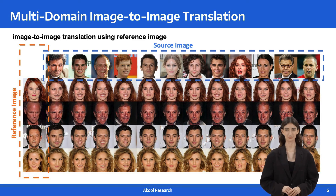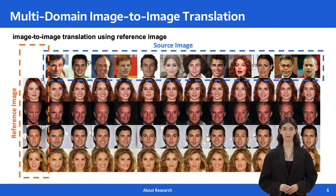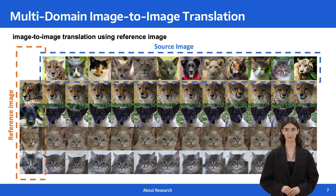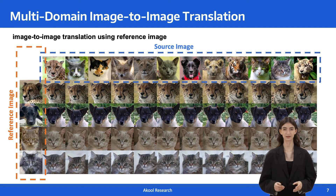We first show the translated images with style codes generated from the style encoder and reference images in the CelebA-HQ dataset. The source images and reference images are placed in the first row and first column. We can see that the face has been successfully translated into the target domains with consistency in expression and head poses. This is another set of examples showing results on the animal dataset. The source images and reference images are displayed in the first row and first column respectively, and the animal faces are successfully translated into the target domains while preserving the original face geometric structures.